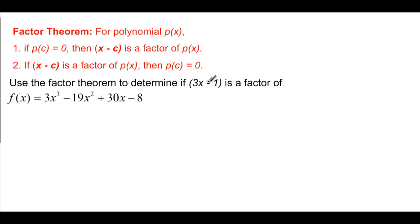So we have here that we want to see if 3X minus 1 is a factor of this. So let's first find out what we have for C. So 3X minus 1, set it equal to 0. 3X is going to be equal to 1, because we're really finding the 0. And dividing by 3, X is equal to 1 third. That should make things interesting.